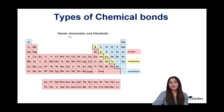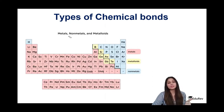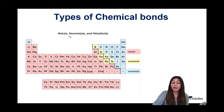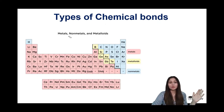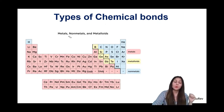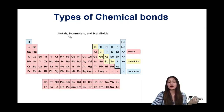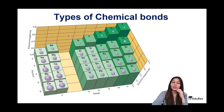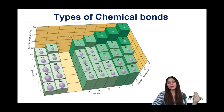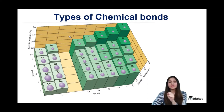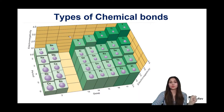Before discussing the different types of chemical bonds, we should know that our periodic table consists of three different kinds of elements: metals, non-metals, and metalloids. Metals are highly electro-positive — on the left-hand side they want to give away their electrons and become positive. Non-metals are highly electronegative — they are ready to take up electrons and become negative.